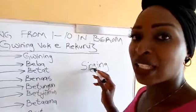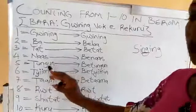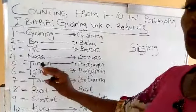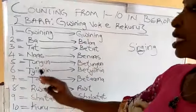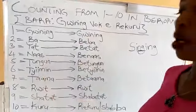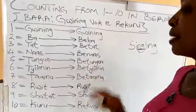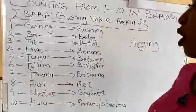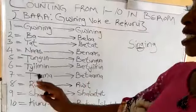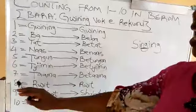You don't say singing, you say singing. So the same applies to Tungun or Bitungun. 6 is Timin or Bitimin. 7 is Tama or Bitama. Tama or Bitama.